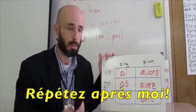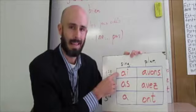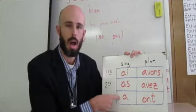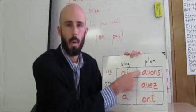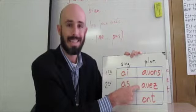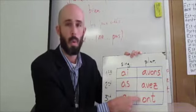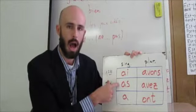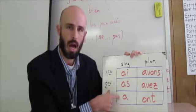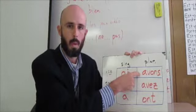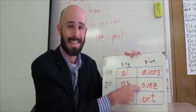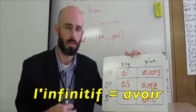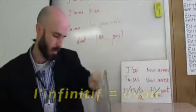Repeat real quick with me. We have ai, as, a, avons, avez, ont. Repeat after me: ai, as, a, avons, avez, ont. And again, the infinitive is pronounced avoir, avoir, avoir.